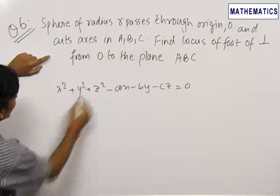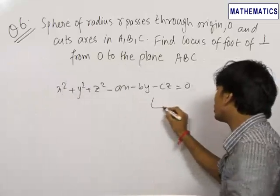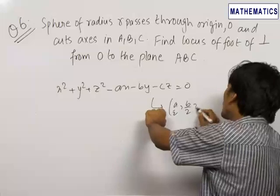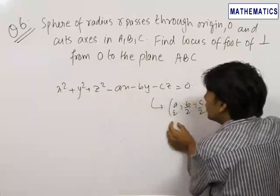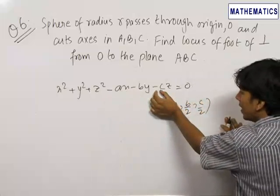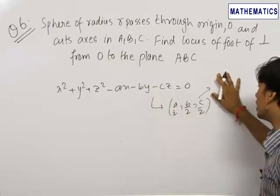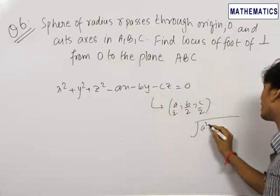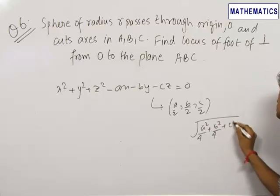It is also given that this sphere has radius R. We know how to find out the radius of the sphere. Let us first find out the center. The center is (A/2, B/2, C/2). You find this by dividing the coefficient of x by −2, coefficient of y by −2, and coefficient of z by −2. To find out the radius, it is equal to √(A²/4 + B²/4 + C²/4).